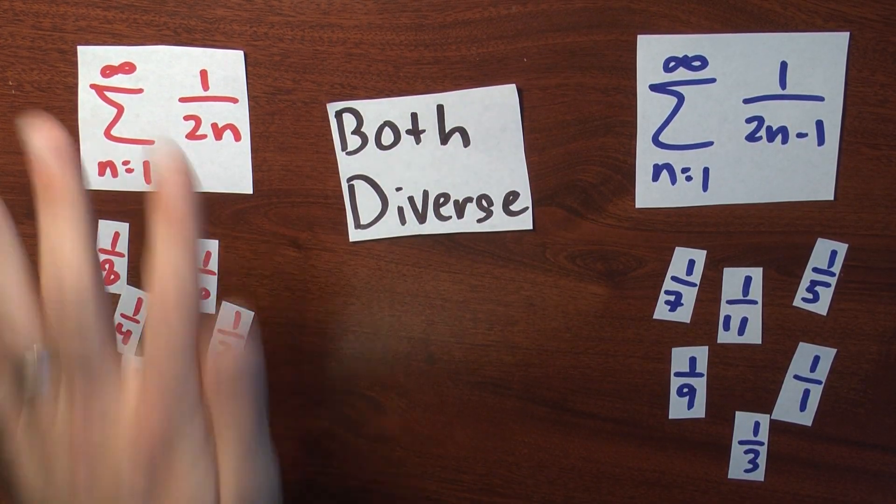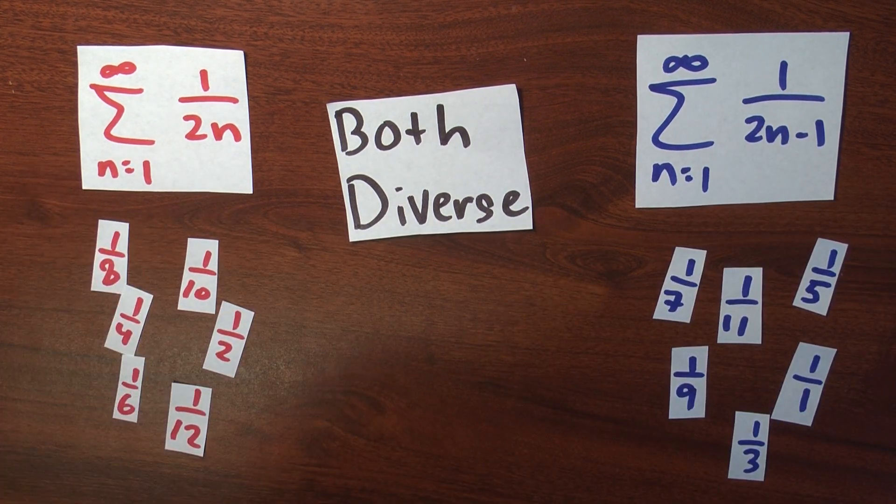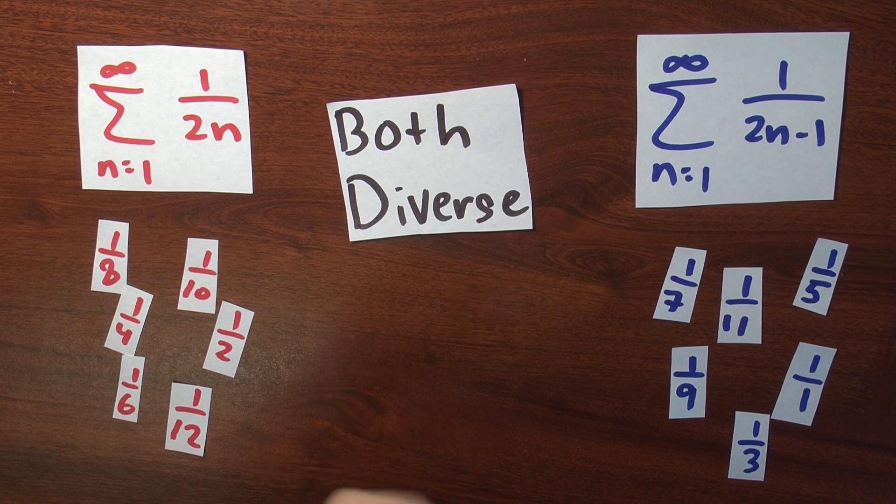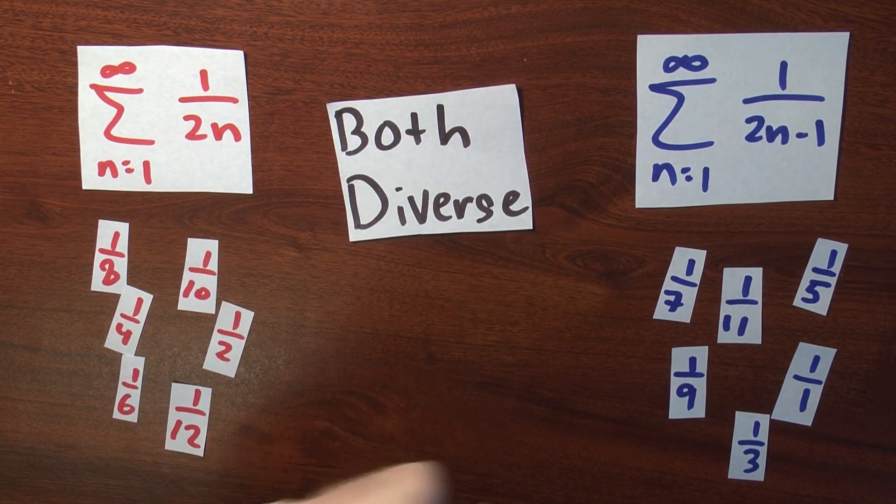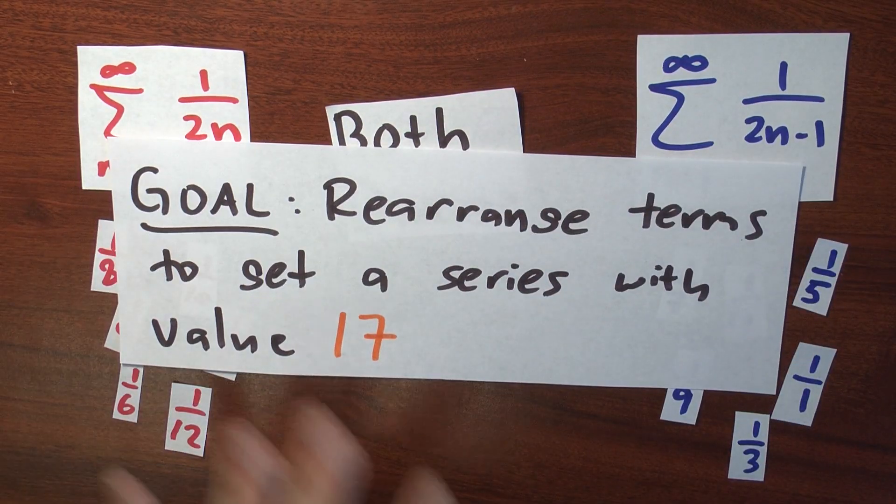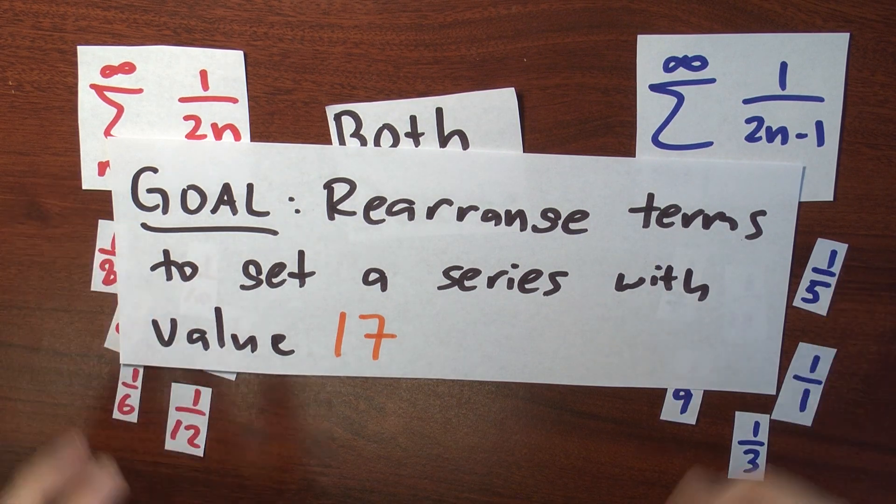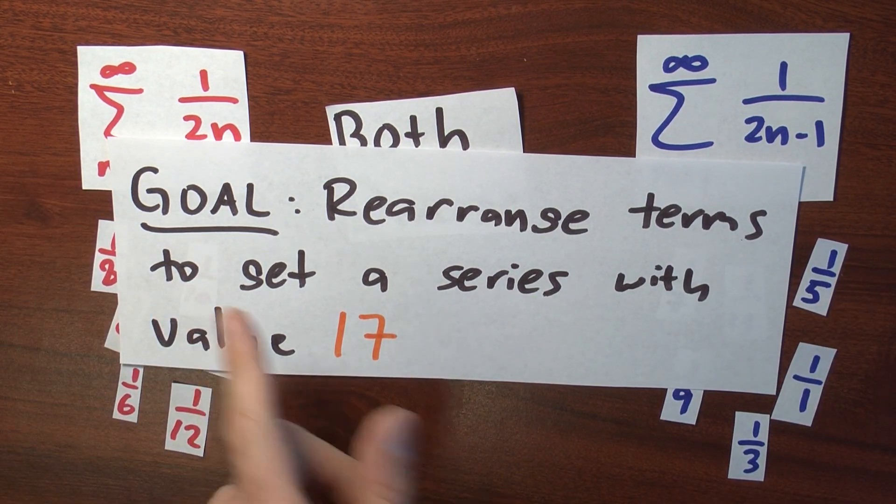So what I've got is really two piles of numbers. And if I take enough from either pile, I can make a number that's as large as I would like. This presents me with the following quite strange opportunity. Here's my goal.